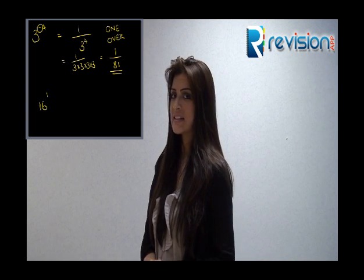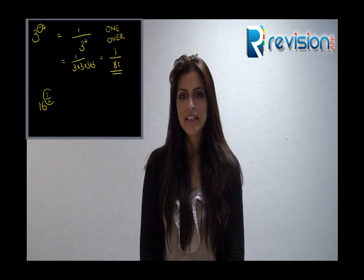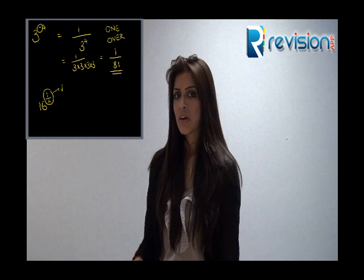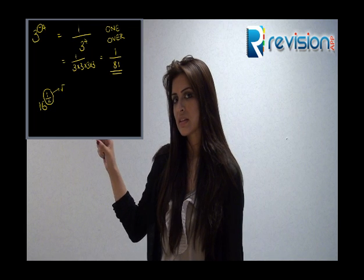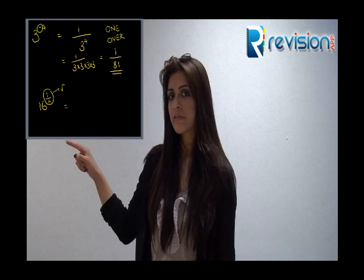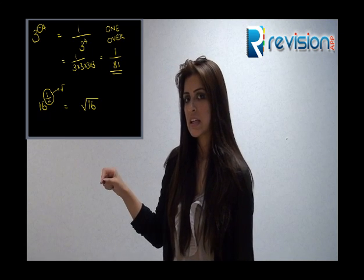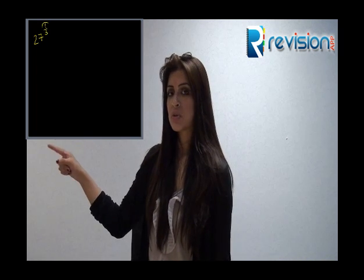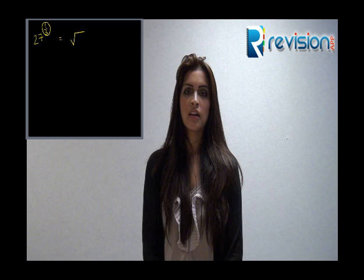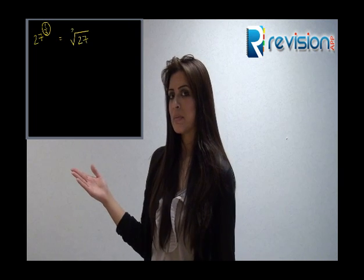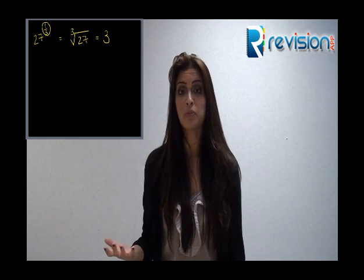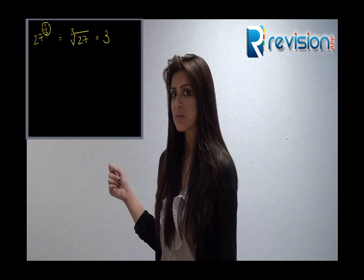Next, let's move on to indices as fractions. Look at this example: 16 to the power of a half. When we have a fraction as an index, we must realise that the fraction means root. Because our fraction is 1 over 2, 16 is being square rooted. So 16 square rooted is equal to 4. What if we had 27 to the power of 1 over 3? Well, 1 over 3 means we're going to root it again, but because we've got a 3 on the denominator, we have to take the cube root. The cube root of 27 is equal to 3.